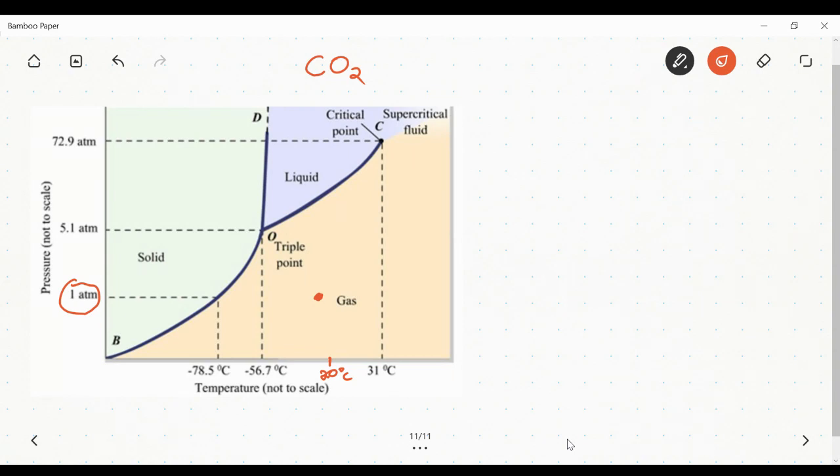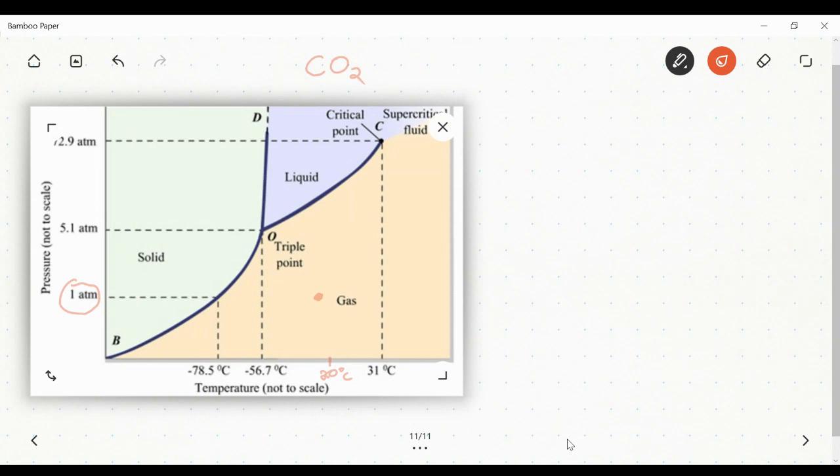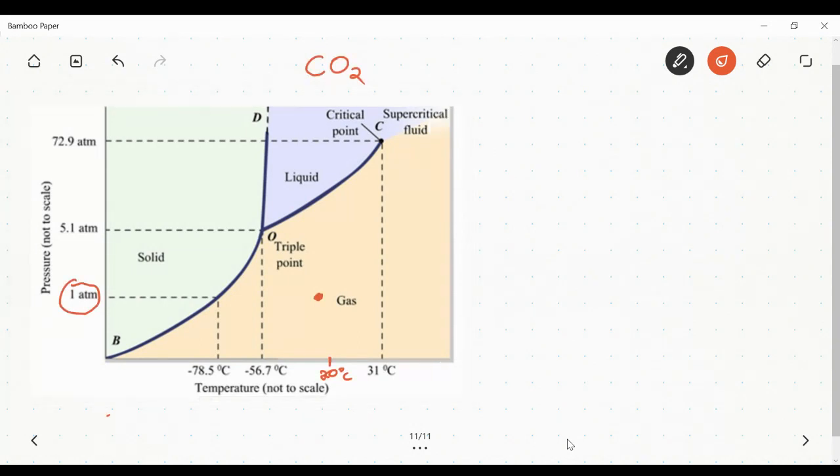So you've heard of dry ice before, and you probably know that in the theater industry and other industries, CO2 is used to create smoke because you can pretty easily take some dry ice that's at a really low temperature and heat it up at one atmosphere, and it will turn directly into the gas phase.